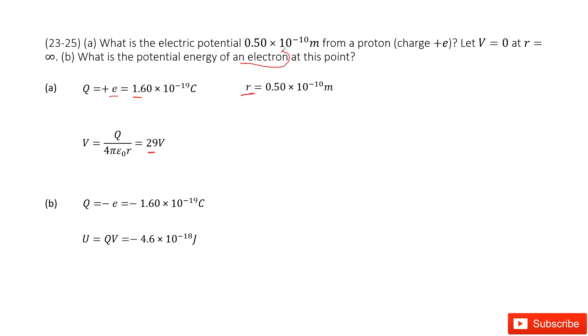The electron carries 1 unit of negative charge, Q = -e = -1.60 × 10^-19 C. We multiply this charge by the potential to get U = QV = 4.6 × 10^-18 J. Thank you.